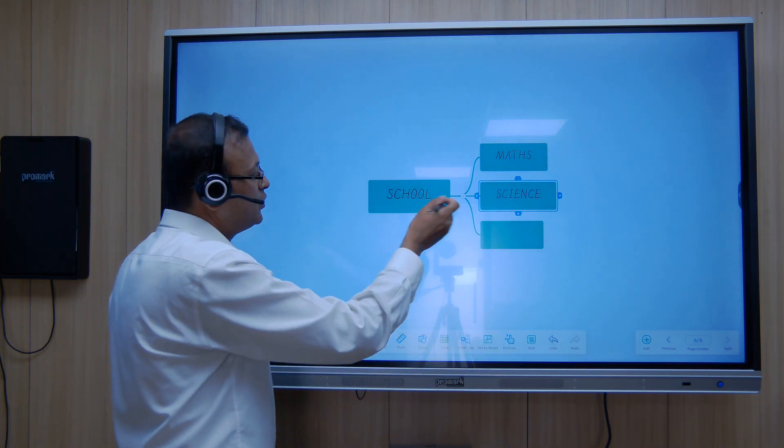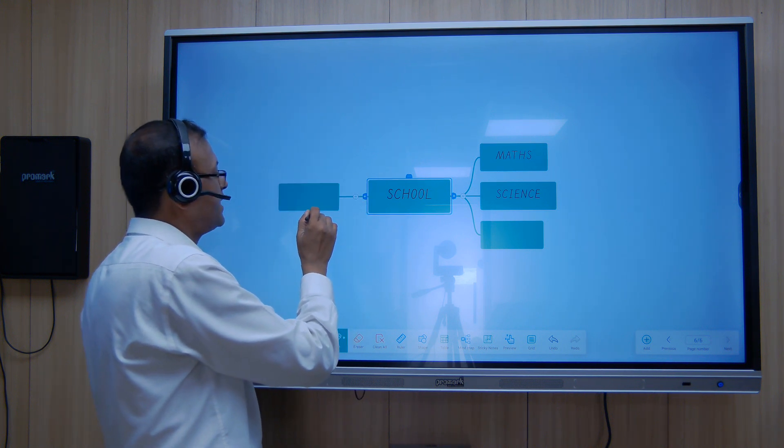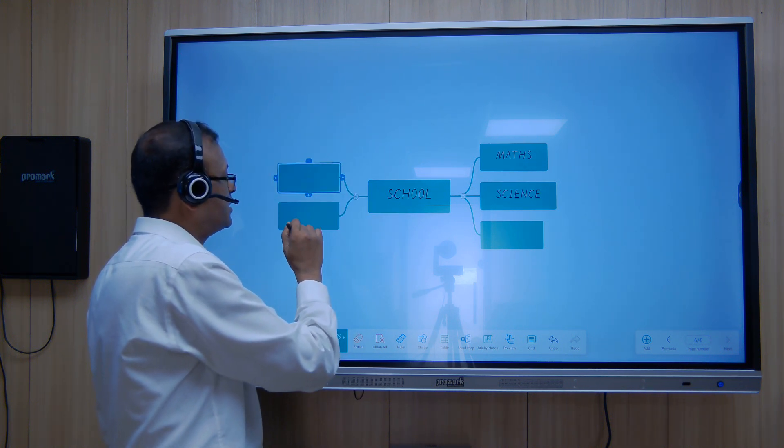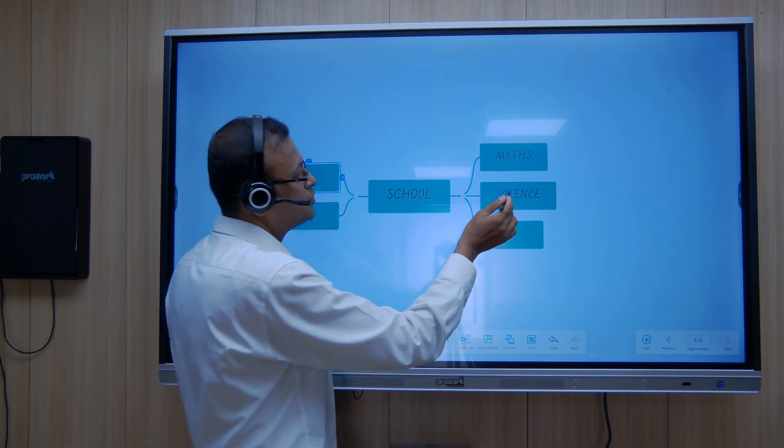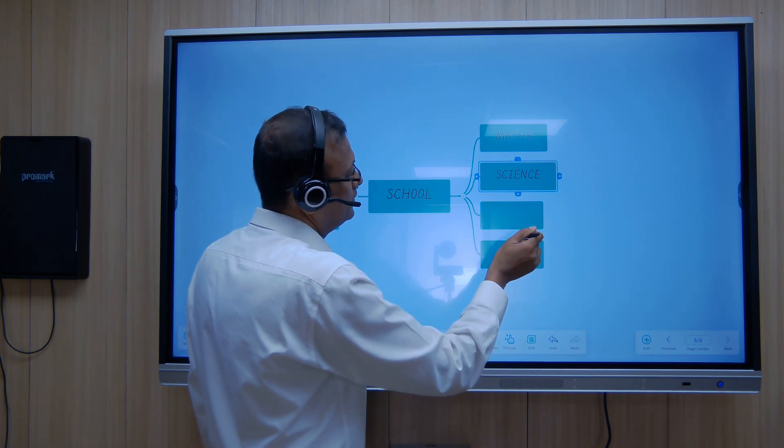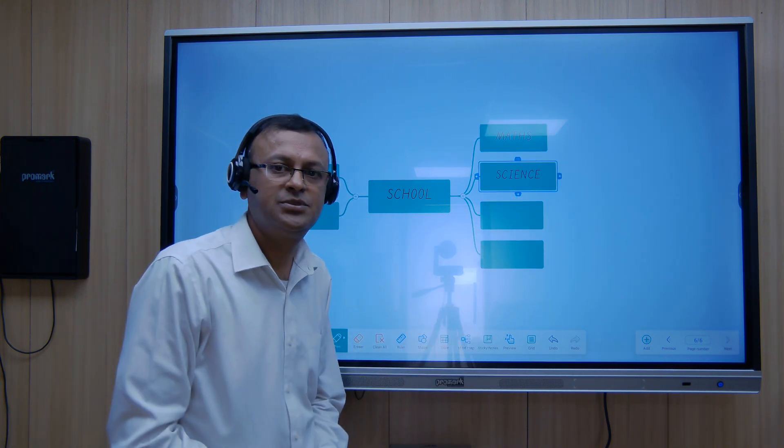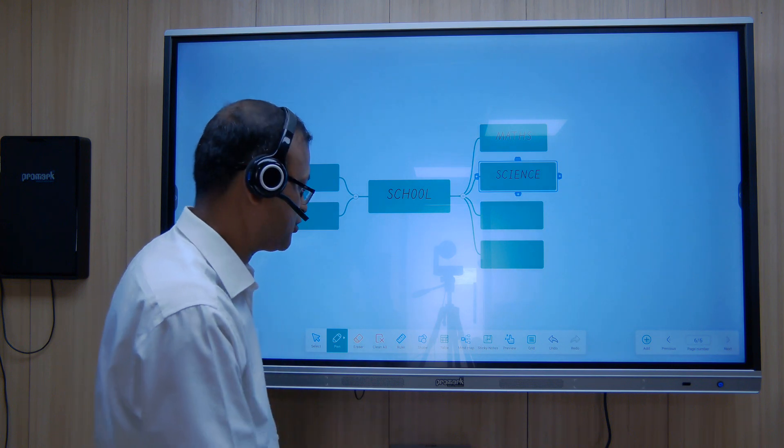We can further expand this. Suppose we want to expand to this side, or we want to expand it further down, we can do this. Here also, if you want to expand it, we can keep doing it. This is the mind map feature.